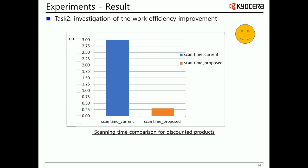The process time of the proposed approach includes placing the product under the camera, performing discount rate and barcode recognition, and displaying the results. In this experiment, we only compare the processing time for discounted products. As shown in the figure, the proposed method takes only 0.3 seconds compared to the average processing time of 3 seconds for one discounted product in the current process. The result shows high processing efficiency of the proposed method.